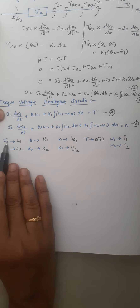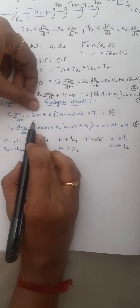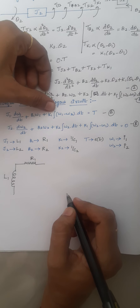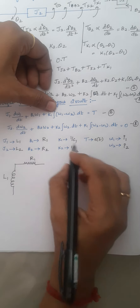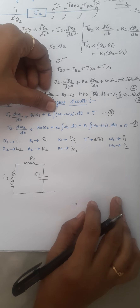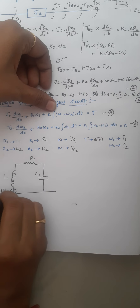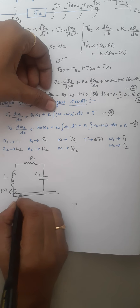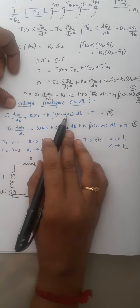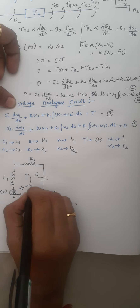Drawing the circuit: J1 is represented as inductor L1, B1 as resistor R1, and K1 — which is common to loops 1 and 2 — as capacitor C1. The source torque T corresponds to voltage source E(t). The first expression has 4 elements and the first loop also has 4 elements: L1, R1, C1, and voltage source E(t), with current I1 flowing through the loop.